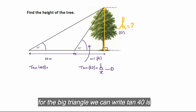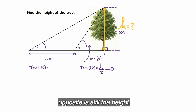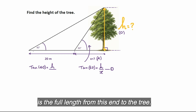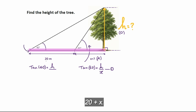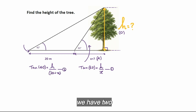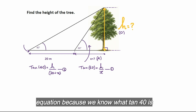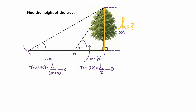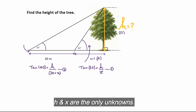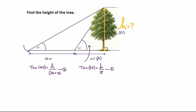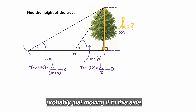We are going to do the same thing for the big triangle. For the big triangle, we can write tan 40 is equal to — the opposite is still the height, and the adjacent now is the full length from this end to the tree, so that will be 20 + x. Now we can see we have two unknowns and we have a simultaneous equation, because we know what tan 40 is and 20 is a number — h and x are the only unknowns.